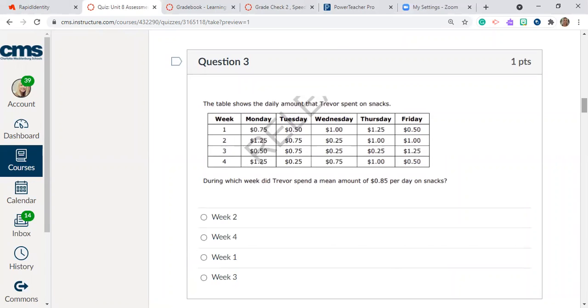Question number three. The table shows the daily amount that Trevor spent on snacks. So we have the weeks over here on the left and then we have the days of the week here. So on Monday the first week he spent 75 cents on snacks and so on. Which week did Trevor spend a mean amount of 85 cents per day on snacks? So here's your week. Week one you're going to want to look across like this. And then week two you're going to want to look across for your data set like this. Then week three. And then week four. So calculate the mean for each week and find out which one was 85 cents per day.